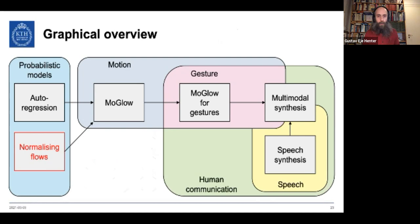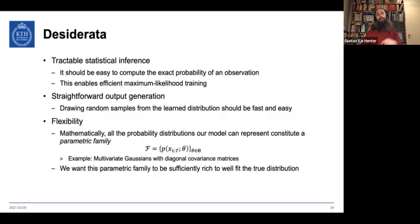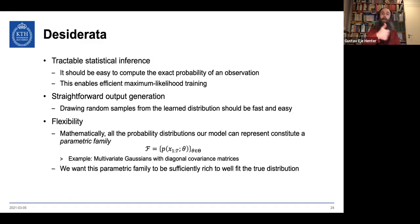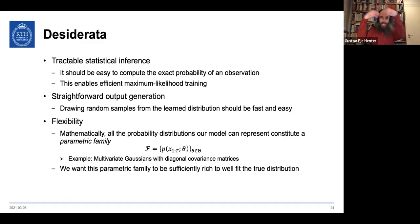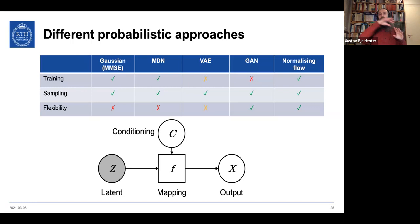Now I'll introduce normalizing flows, which power our methods. For a probabilistic method, we want three things: to train it well using maximum likelihood estimation, to generate output efficiently by sampling, and for it to be flexible — the parametric family needs to cover distributions similar to what we actually want. Let's look at classical and modern approaches and see where their strengths and weaknesses are.